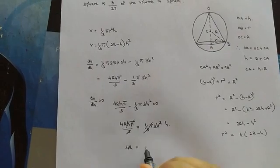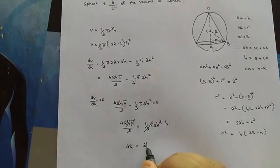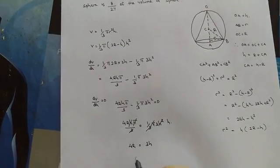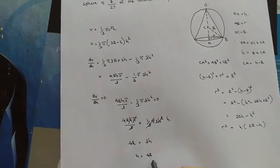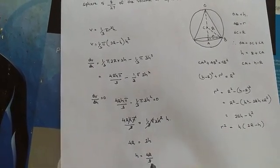Simplifying, we get 4R equals 3H, or H equals 4R by 3. This is the critical height.